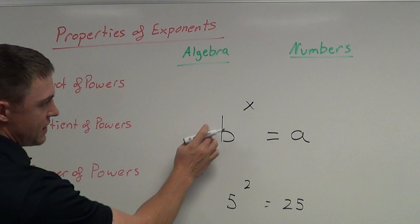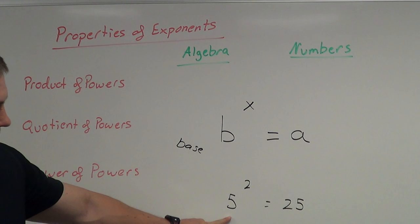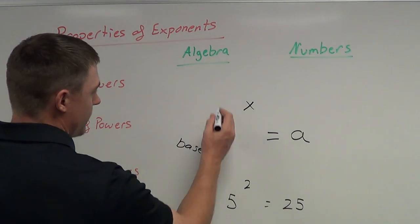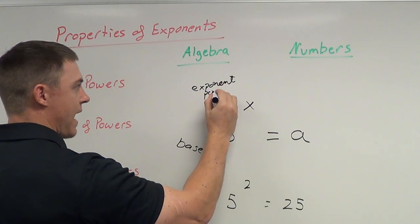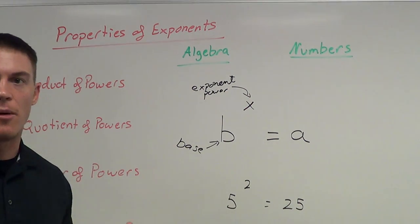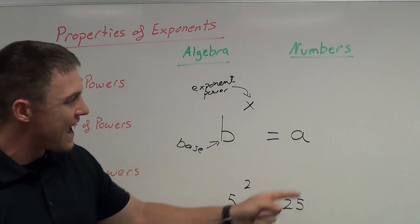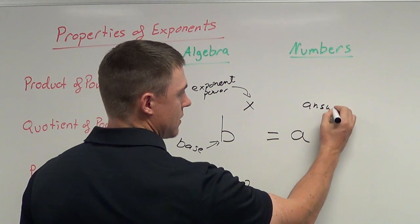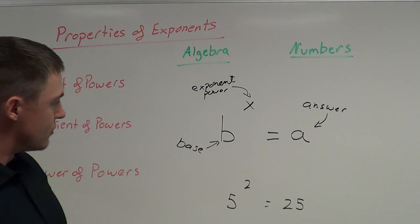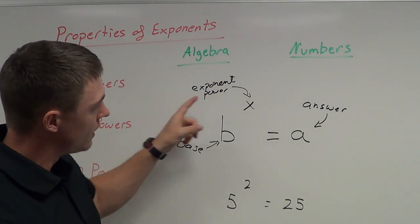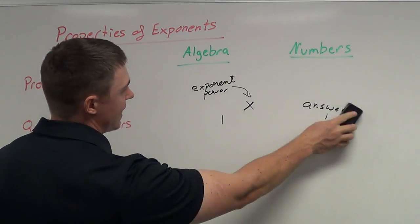The reason I use b, x, and a is because b is the base — in this example, 5 is the base. The x up here we call the exponent, or the power — you can use either term. In the number example, 2 is your exponent. And I use a for answer — in this case, 25 is your answer. So the vocabulary is: base, exponent or power, and answer.